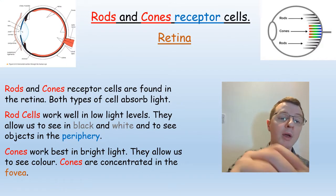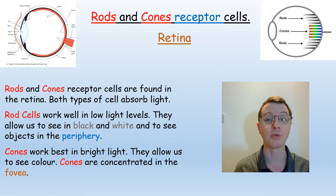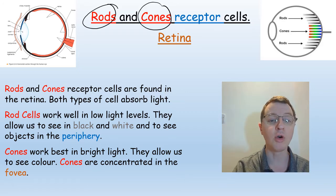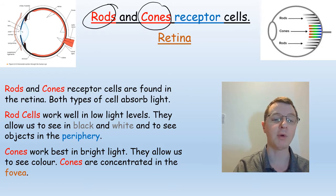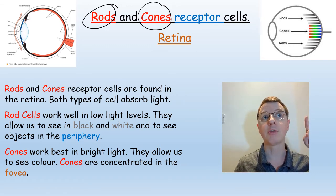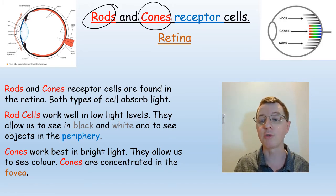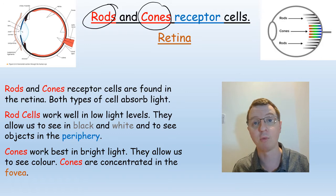The retina is found at the back of the eye and it's full of cells that absorb light energy and create electrical nerve impulses. It has two main types of cells: rods and cones. Both are receptor cells found in the retina and both absorb light. The rod cells work very well in low light levels — they allow us to see in black and white and to detect objects in your periphery. An object just outside your direct vision will appear as a dark image of something moving. This is a very useful survival tactic because you can detect something that might be about to attack you and have a reflex action to protect yourself.